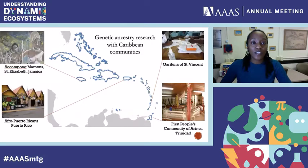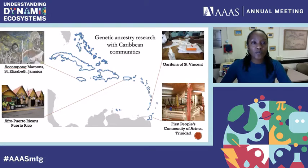In my research, I've collaborated with a number of communities across the Caribbean in order to learn more about the origins, dispersals, and biological relationships of these populations. More recently, I've worked with a community in Jamaica to learn more about African and Indigenous interactions during the colonial period. In St. Vincent and in Trinidad, I've worked with communities to learn more about the impacts of Indigenous peoples on shaping the genetic variation of contemporary populations. Most recently, I've begun work in Puerto Rico to examine African ancestry, and this is the work I want to share with you today in a little more detail.